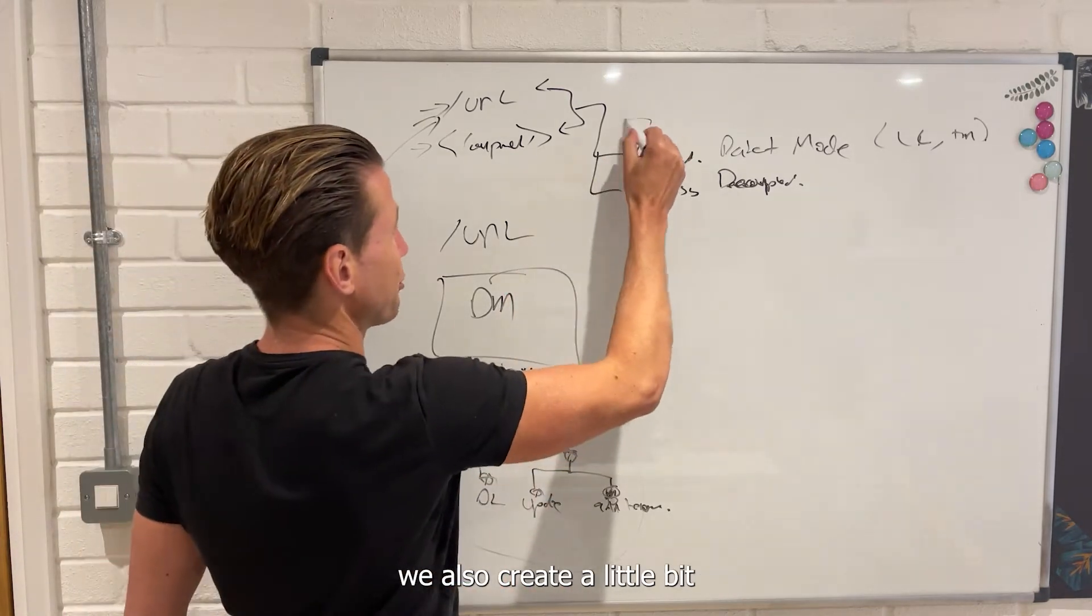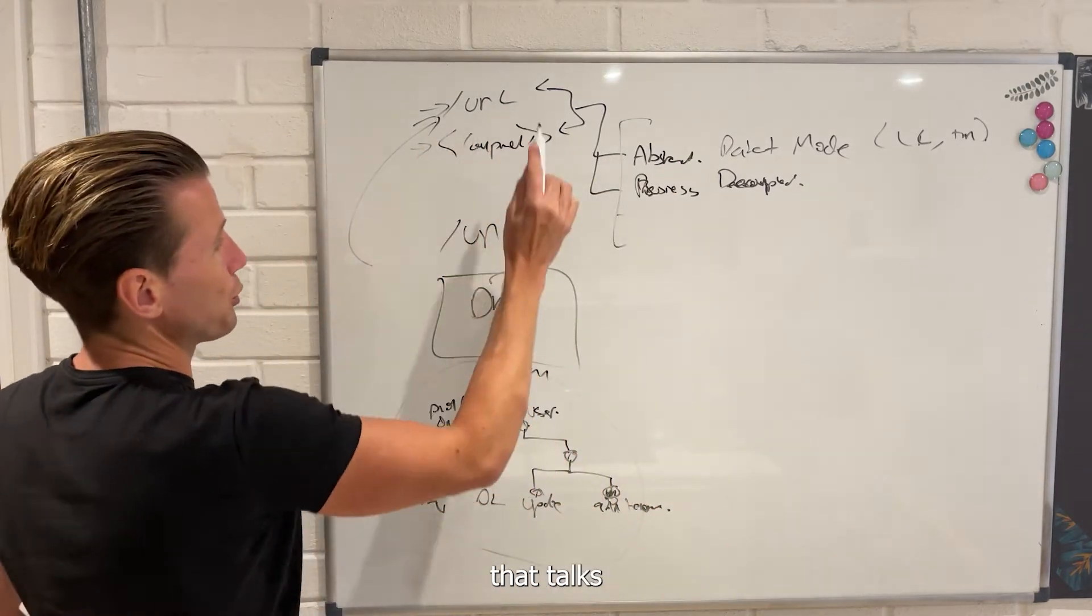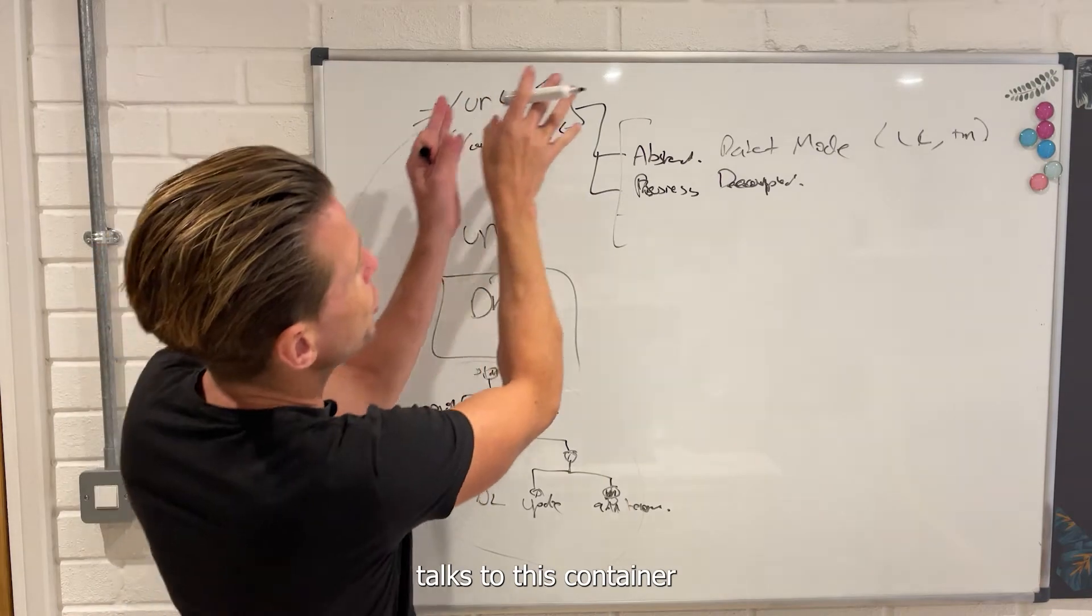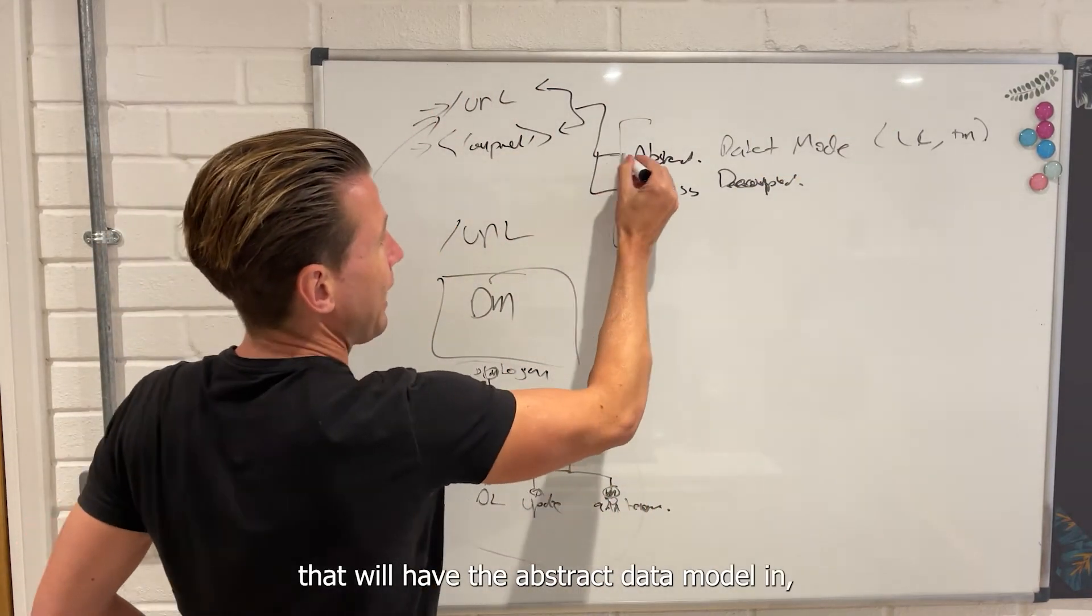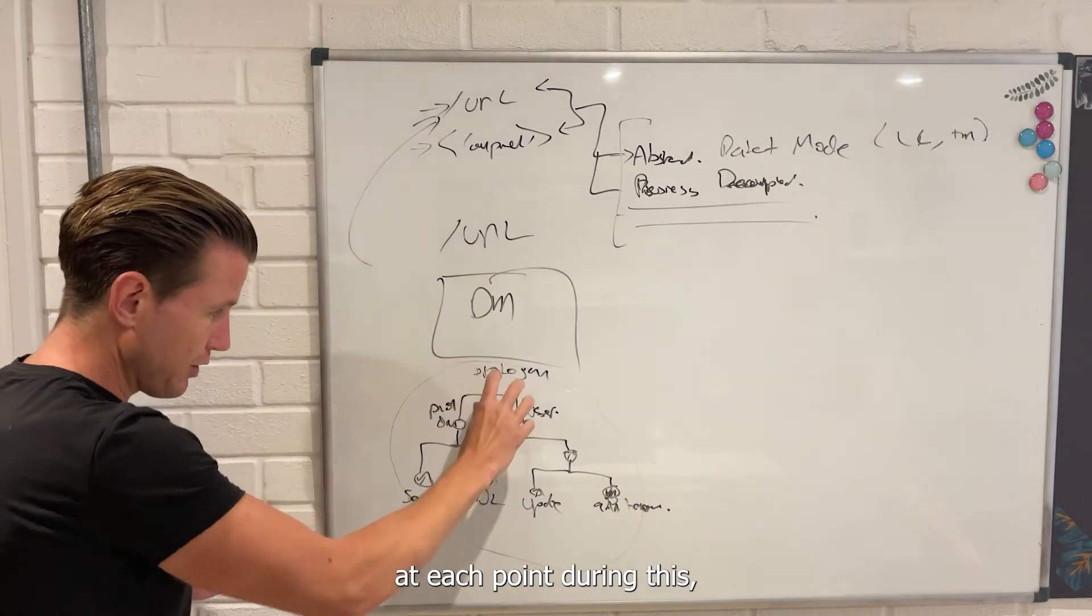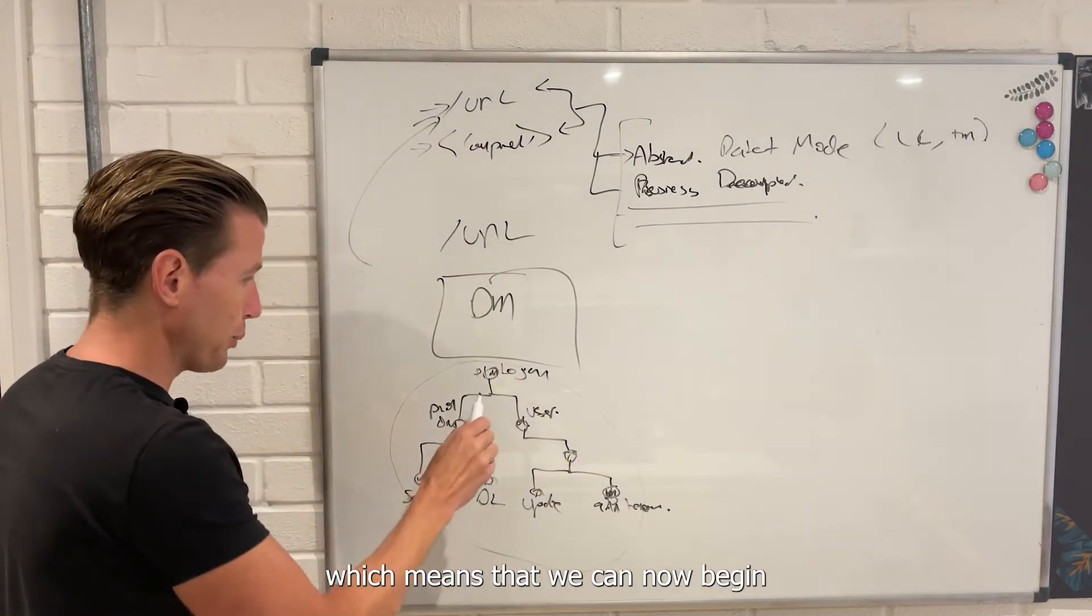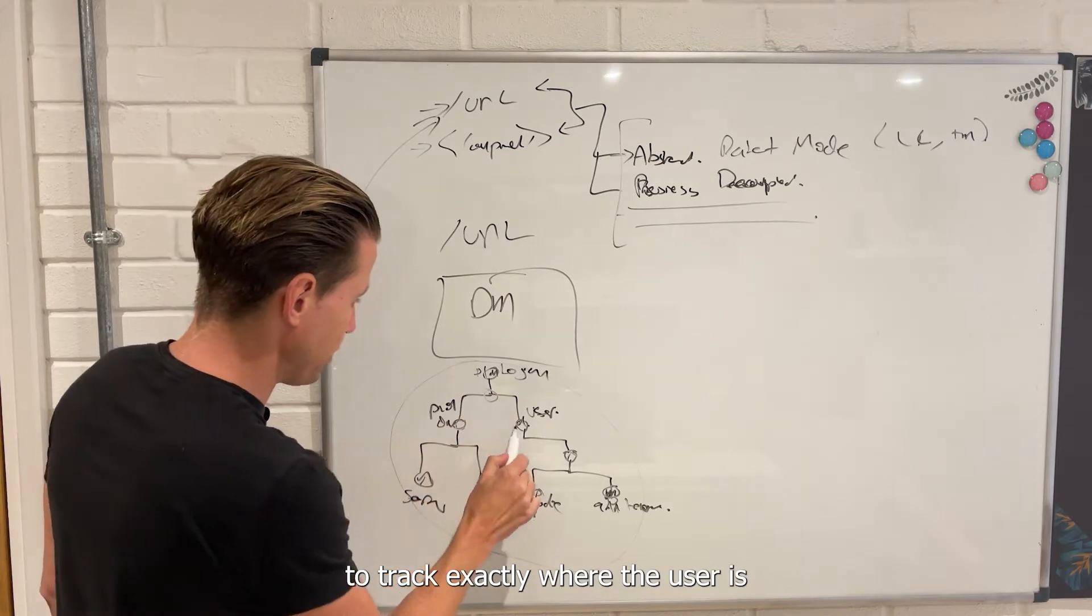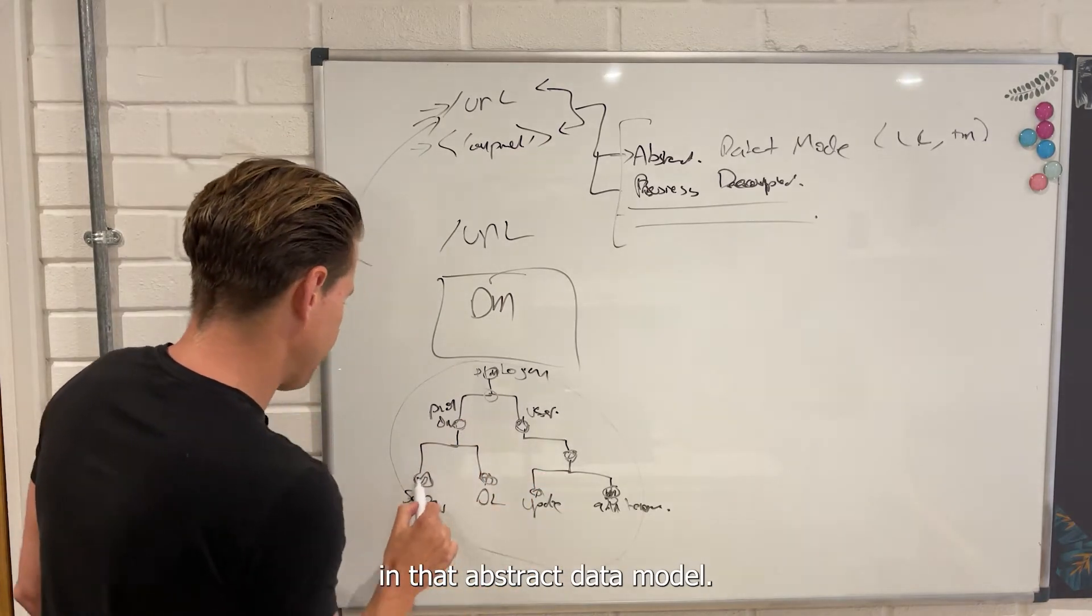We create an abstract data model, but then critically, what we do is we also create a little bit of a container that talks with the routing framework, talks to this container that will have the abstract data modeling, but it will also let us run independent business processes at each point during this, which means that we can now begin to track exactly where the user is in that abstract data model.